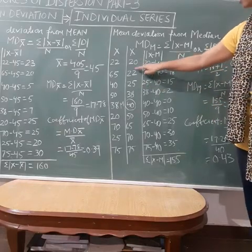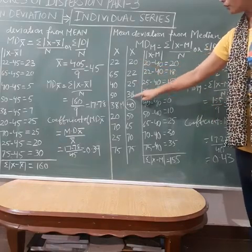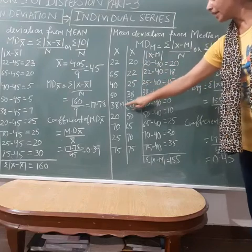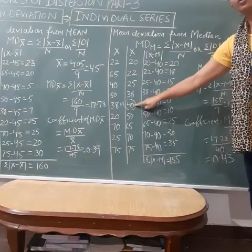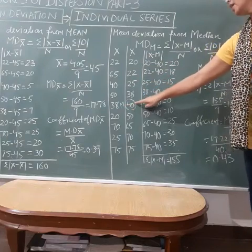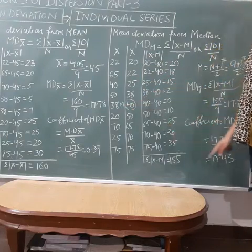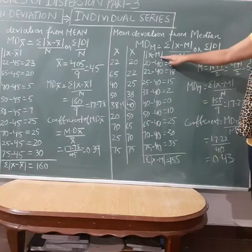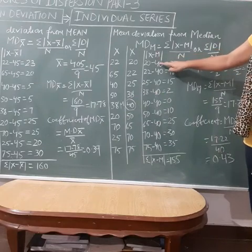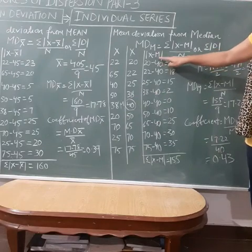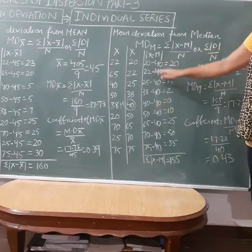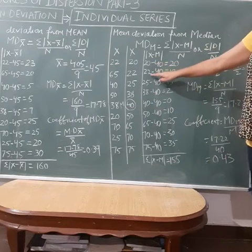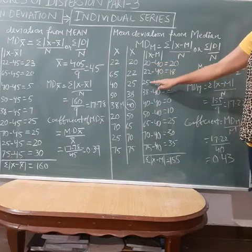So the median is the 5th term. Counting: 1, 2, 3, 4, 5 — the 5th term is 40. Therefore, median = 40. Now we will subtract the value of the median from all the x values: 20 minus 40, 22 minus 40, 25 minus 40, 38 minus 40.